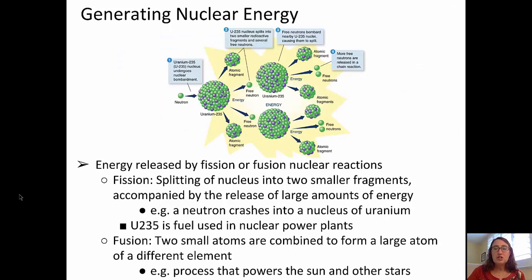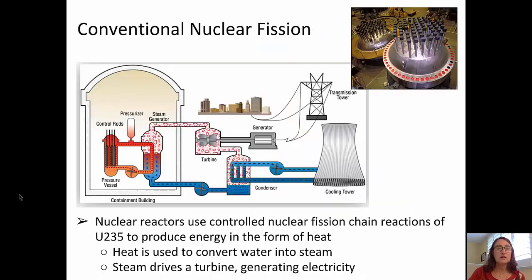Energy is released by fission or fusion in nuclear reactions. A fission reaction takes place when nuclei split into two smaller fragments, accompanied by the release of large amounts of energy in the form of heat. You can see in the diagram that a neutron impacts a uranium-235 atom, which causes that fission reaction to take place. Fusion is when two small atoms are combined to form a large atom of a different element, and that's the process that powers the sun and stars.